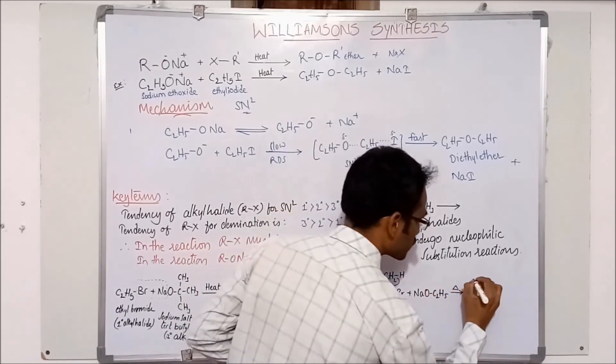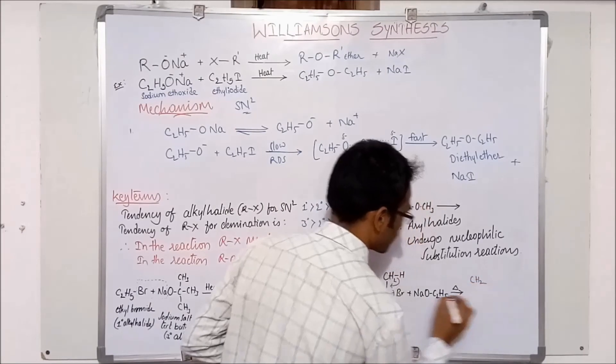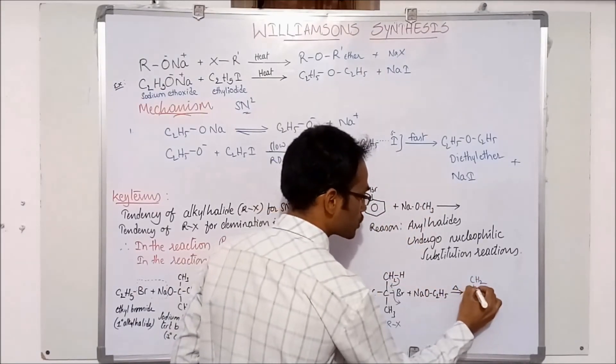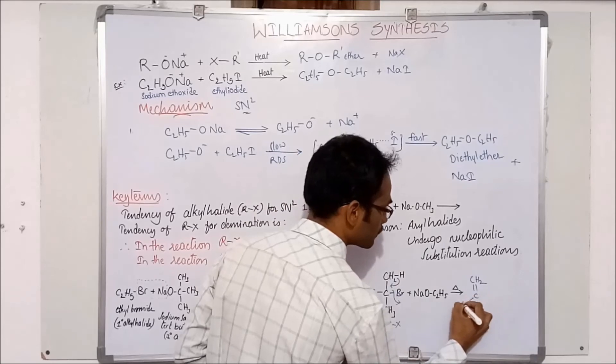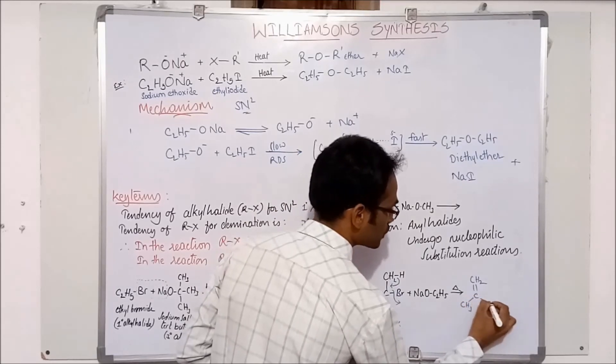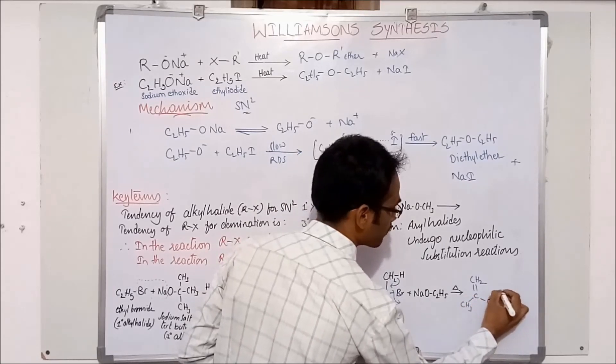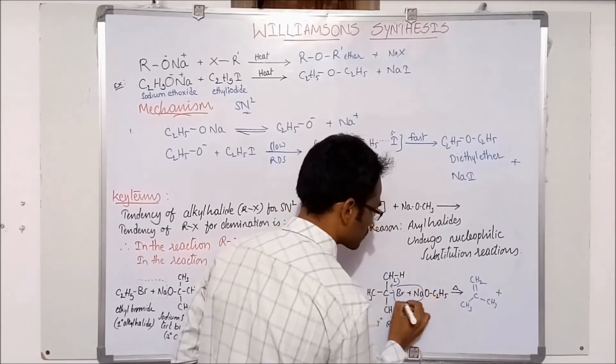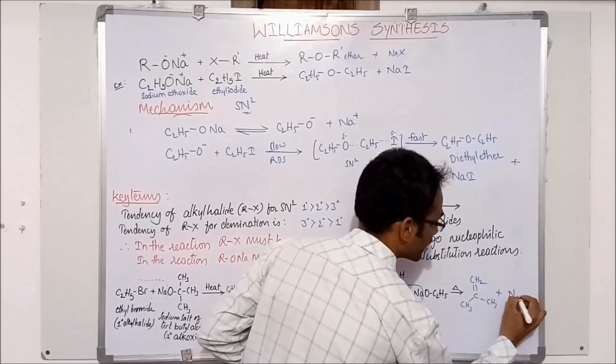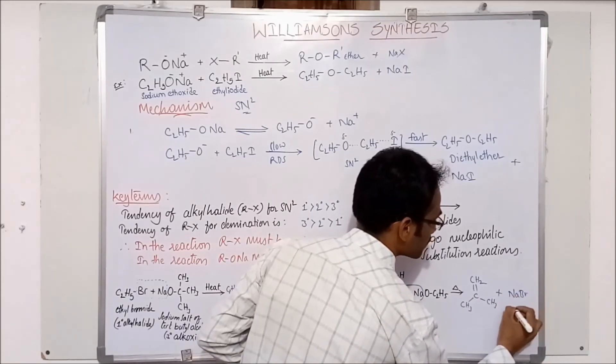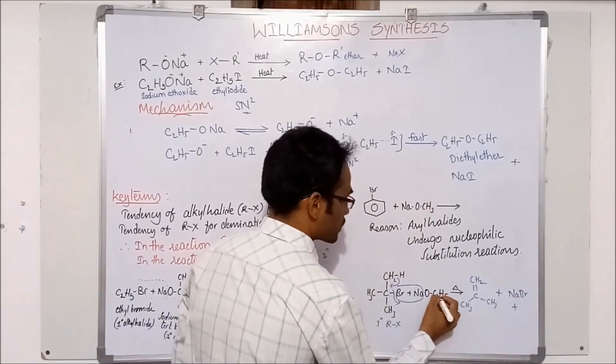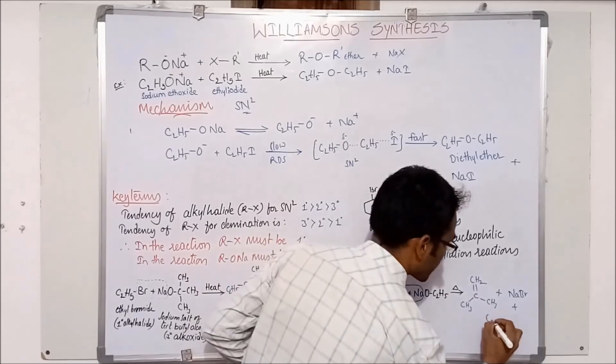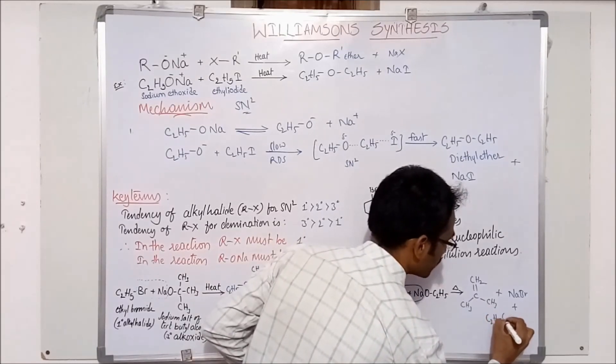CH2 elimination, hydrogen is eliminated and CH2 which forms double bond with carbon which forms CH3, CH3 plus Br is eliminated which forms bond with sodium forming NaBr plus C2H5O and hydrogen forms bond as C2H5OH.